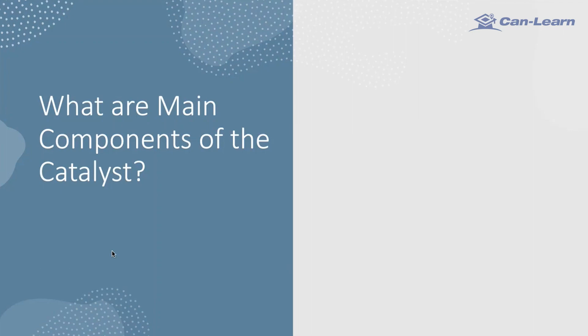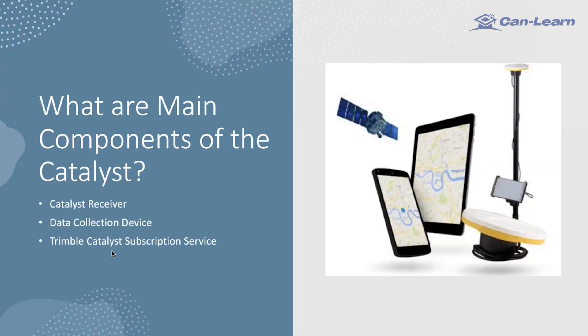What are the main components of the Catalyst? Catalyst is a combination of three main components. The first one is the Catalyst digital antenna, DE1 or DE2. The second component is a device to do the data collection on, like a tablet or a phone or a Tramble device like the TDC-600 or 650. The third component is a Tramble Catalyst subscription service, which can be purchased for a fixed time period or as an on-demand user's plan, and are available at a range of accuracy levels to suit your particular job requirement.